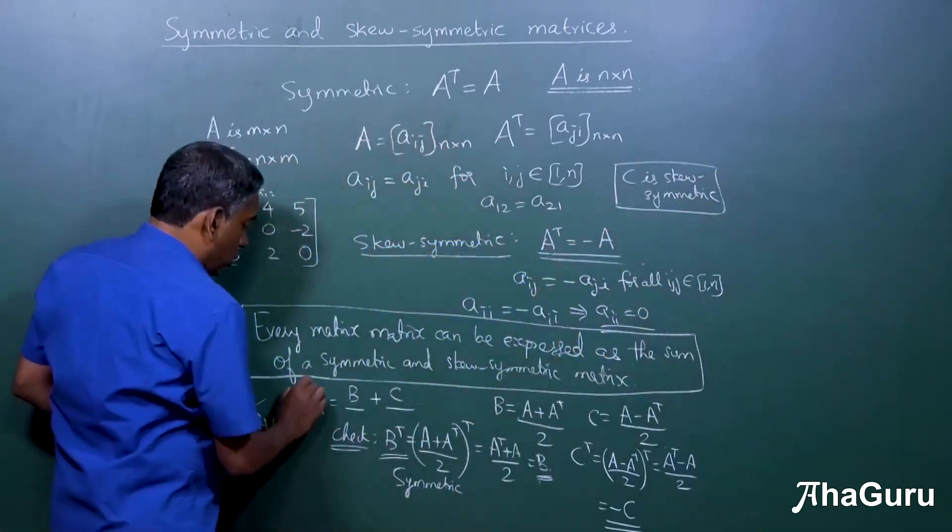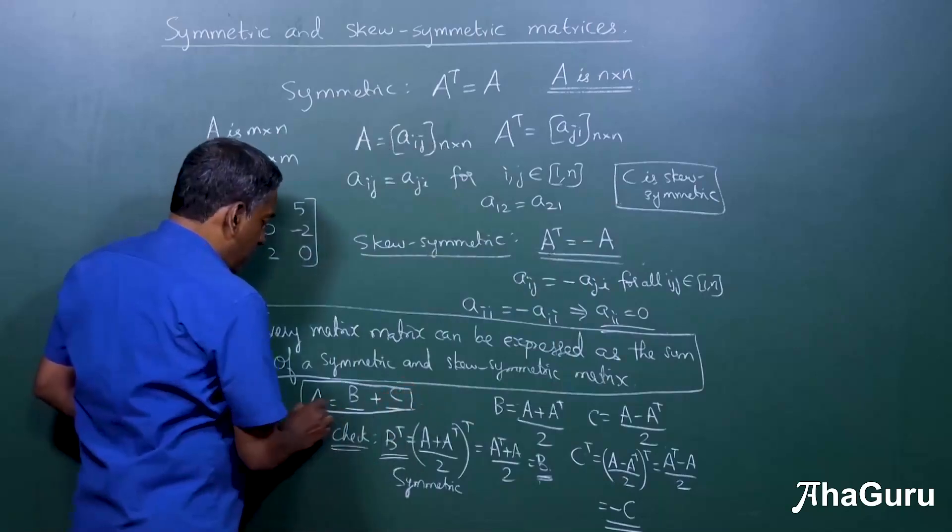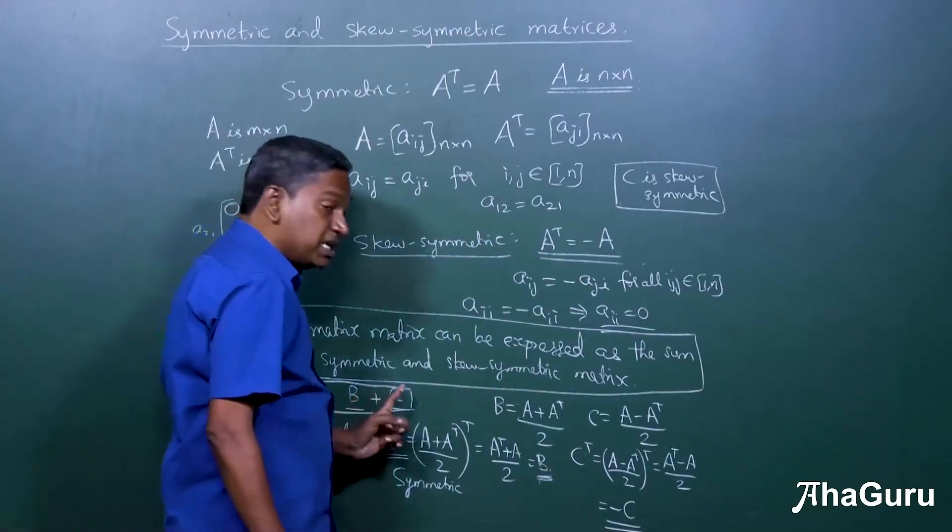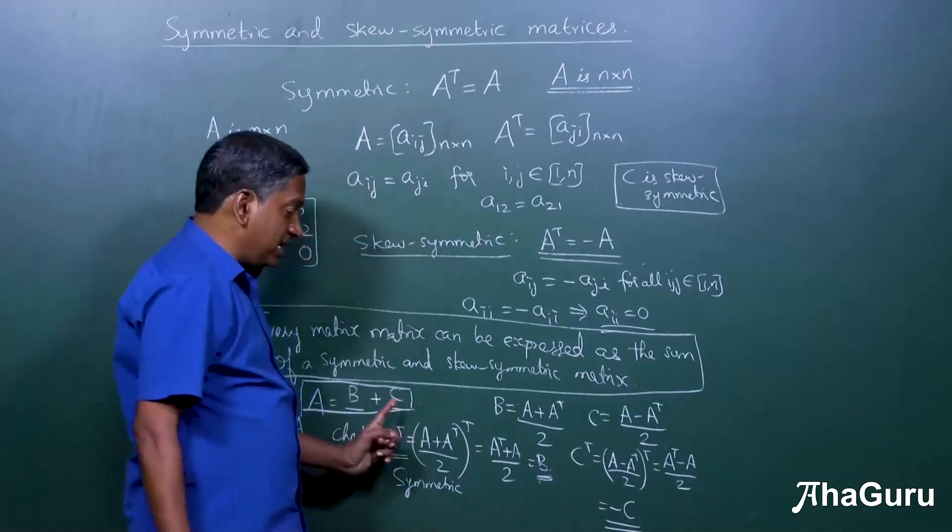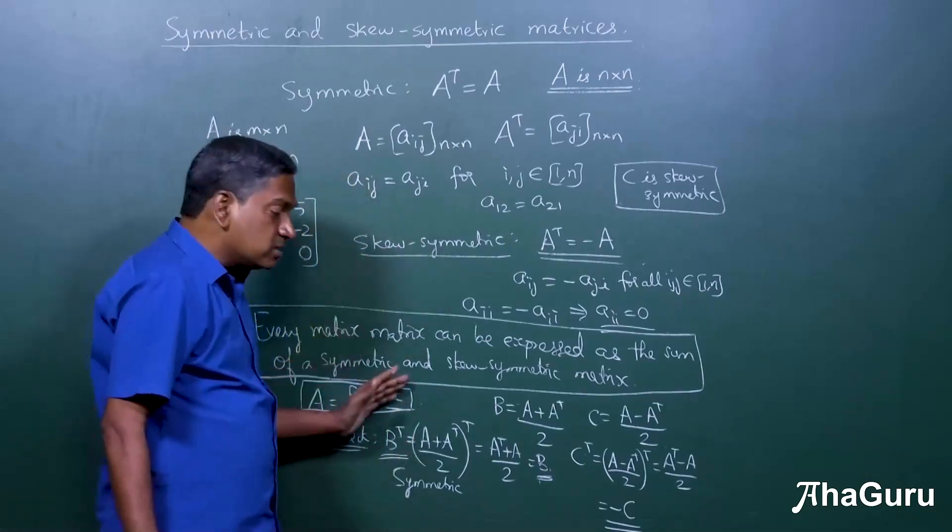Therefore, we have attained our goal that we have an A which equals B plus C, symmetric plus a skew-symmetric matrix, and this is true for any square matrix. You can always split it into symmetric and skew-symmetric matrix.